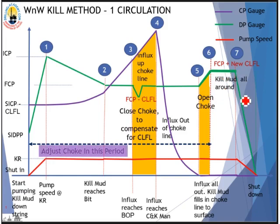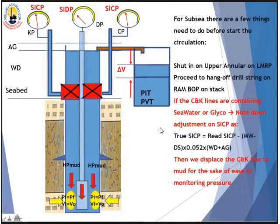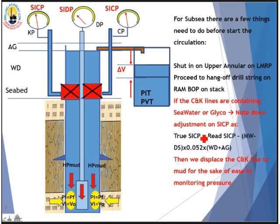When kill mud is all the way around, we can shut the pump down. Now we get into the step-by-step detail of this procedure. Before we start circulation, a few things need to be done first. We set the well in on the upper annular on the LMRP, then hang off the drill string on a ram BOP in the stack. If the choke and kill lines are filled with seawater or glycol, note down the adjusted shut-in casing pressure as the new true shut-in casing pressure using this formula. Then we displace the choke and kill lines to the same mud as in the hole for easy pressure monitoring.